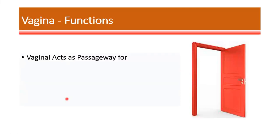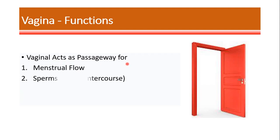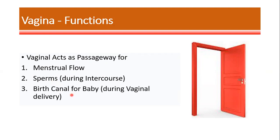What are the functions of the vagina? The vagina majorly acts as a passageway for three things. First, it acts as a passageway for the menstrual flow. Second, it acts as a passageway for the sperms during sexual intercourse, where the sperm enters through the vagina into the female reproductive system. Third, it acts as a birth canal for a baby during vaginal delivery.